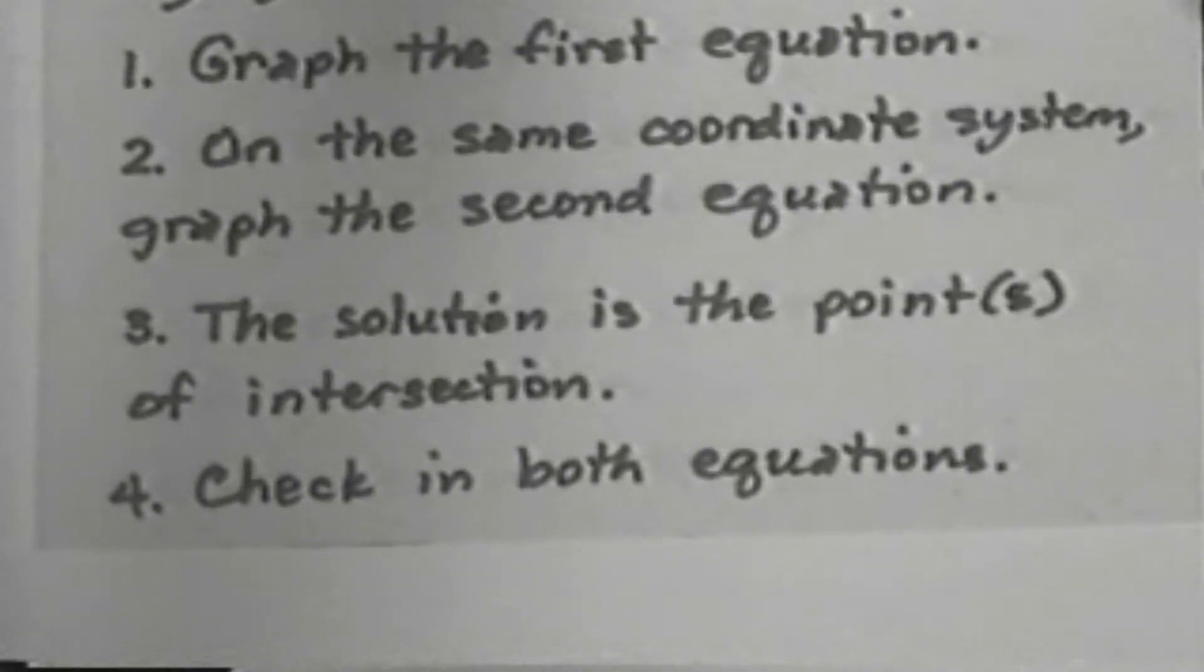So we have to do three things to find the solution. We have to graph the first equation, graph the second equation, then read the solution off the graph. Our fourth thing is to check, and of course, it's always smart to check.